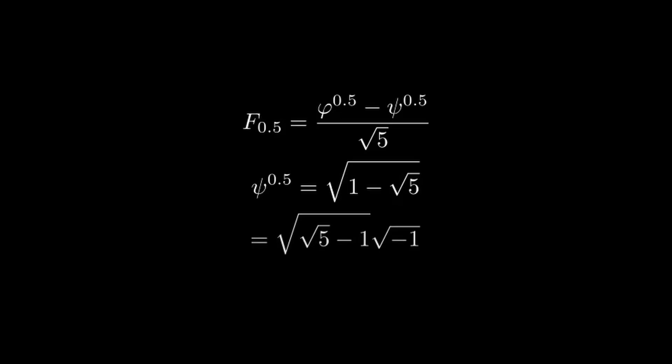We can broaden our scope to the complex numbers by letting the square root of minus 1 equal to i. This allows us to find the one half Fibonacci number.